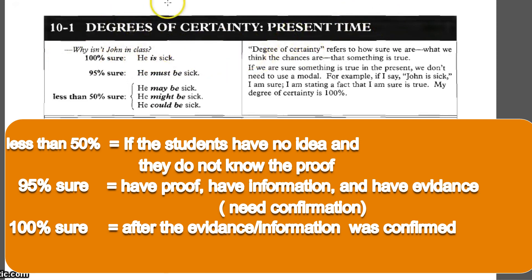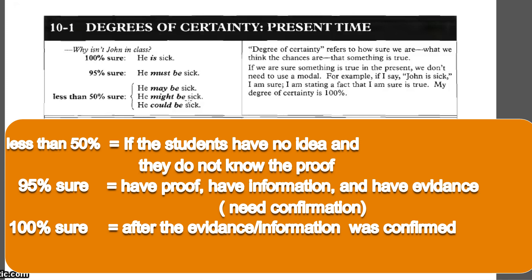Untuk degree of certainty in the present, kita menggunakan tiga level kepastian. Kenapa John tidak masuk kelas? Respon siswa bisa bermacam-macam: mungkin John terlambat, mungkin John sakit, mungkin John malas. But they have no proof — they just give suggestions without evidence. Mereka tidak memiliki fakta, hanya memberikan ide yang terlintas di pikiran. Makanya kepastiannya less than 50%.